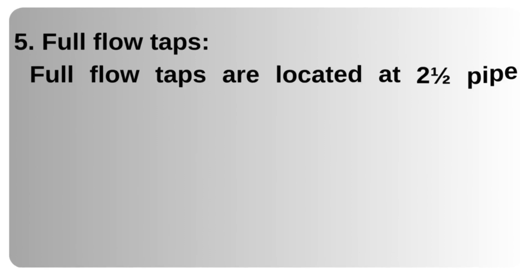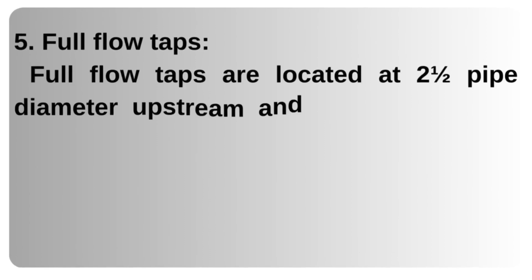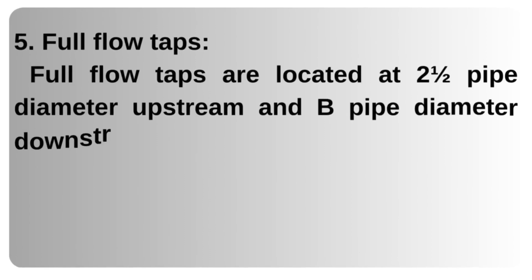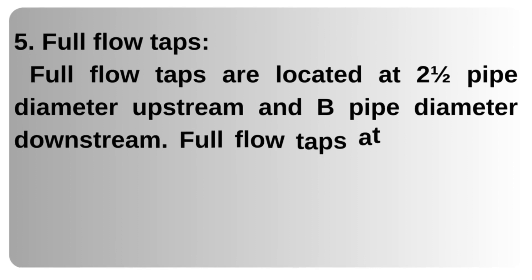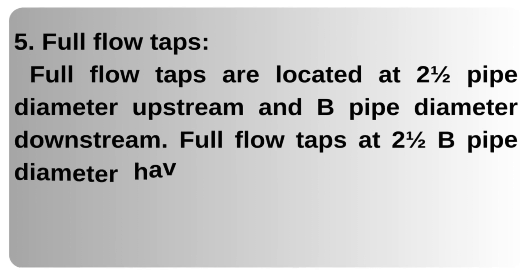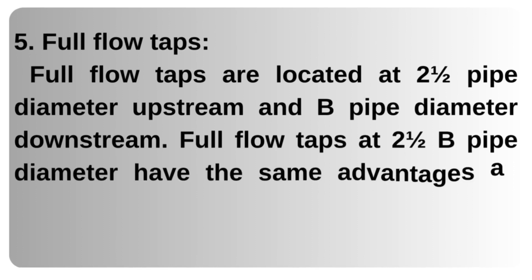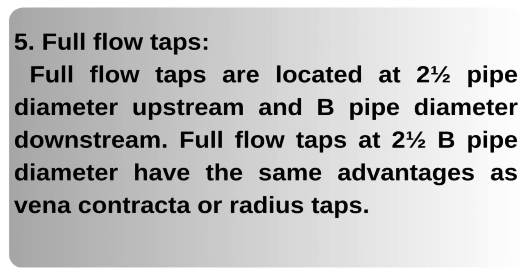5. Full flow taps — located at two and a half pipe diameters upstream and eight pipe diameters downstream. Full flow taps at two and a half pipe diameters have the same advantages as vena contracta or radius taps.